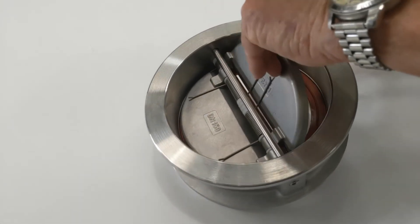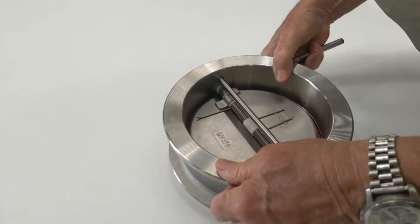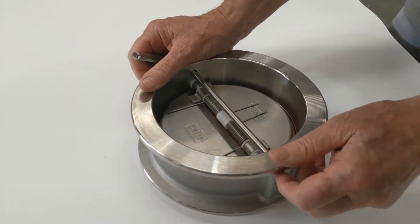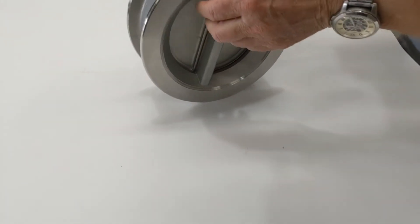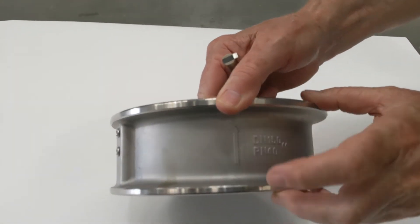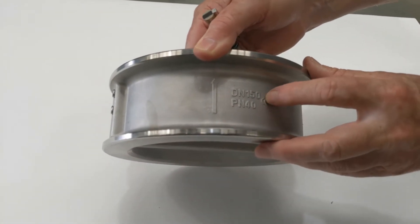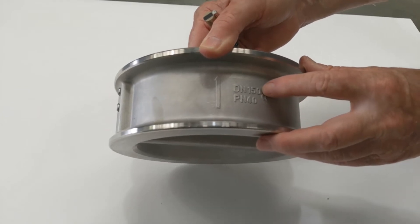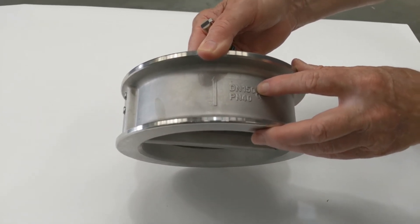Ideal for petrochemical applications. Direction of flow is there. Direction of flow on this unit, also the size, this particular one is 150 millimeter duo check with the nominal pressure rating in there as well.